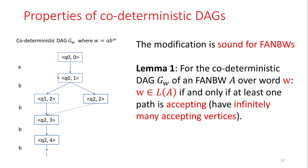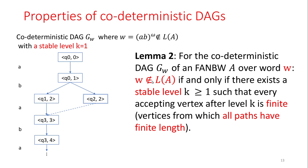Moreover, we prove that in the codeterministic DAG, w is not accepted by A if and only if there exists a stable level K such that every accepting vertex after K is finite — that is, accepting vertices are vertices from which all paths have finite length. You can see the codeterministic DAG G_w over the word AB^ω has a stable level K=1, and the accepting vertex after level 1, Q2-2, is finite.